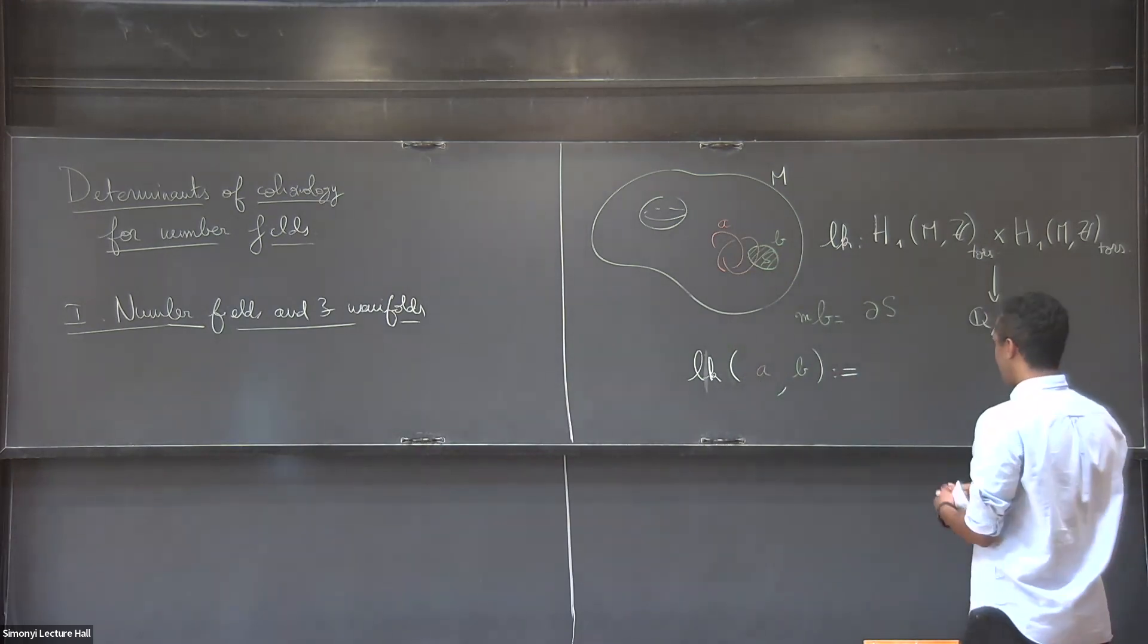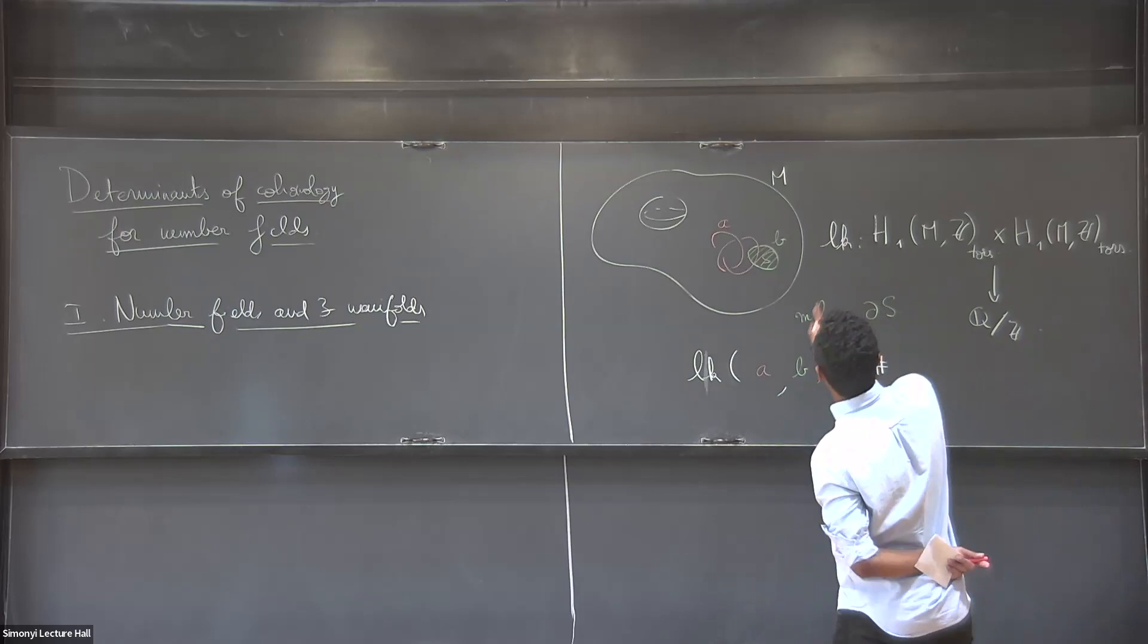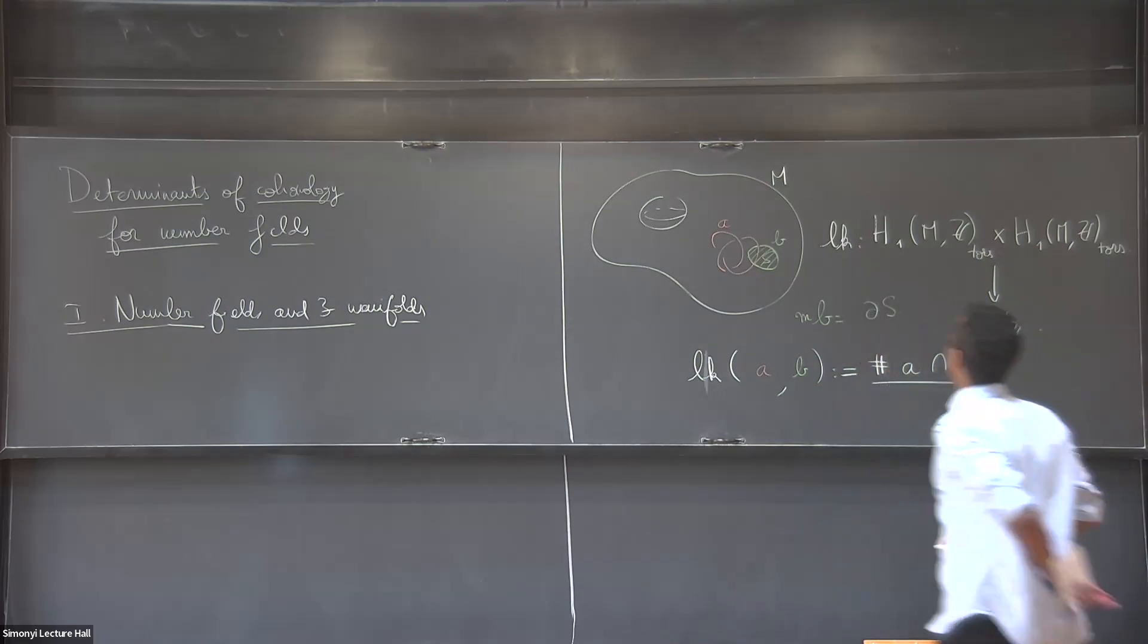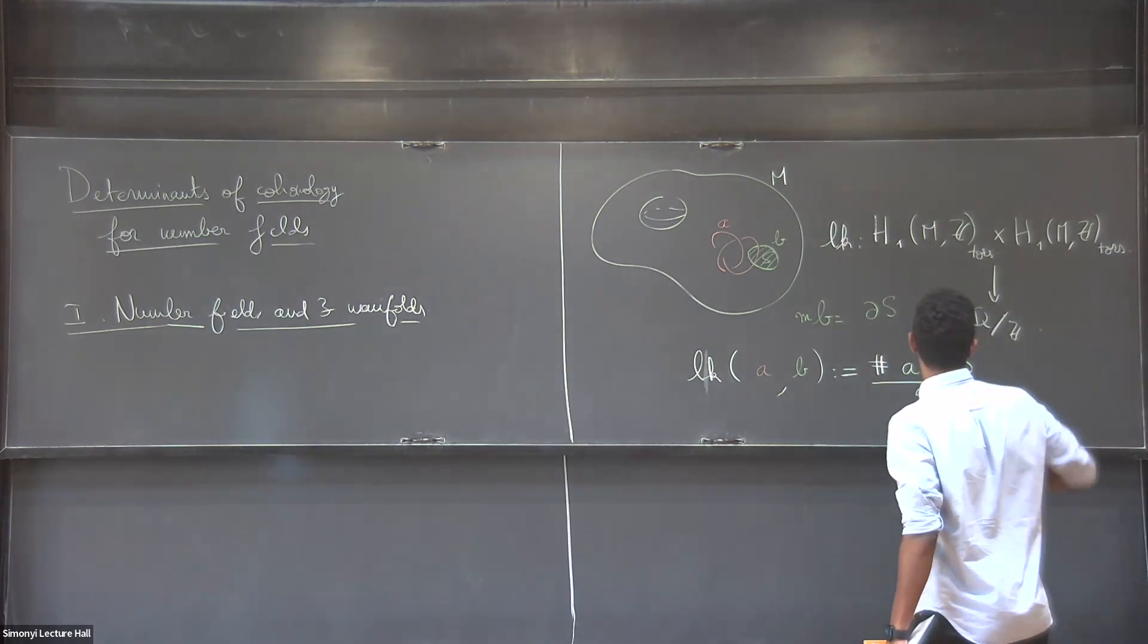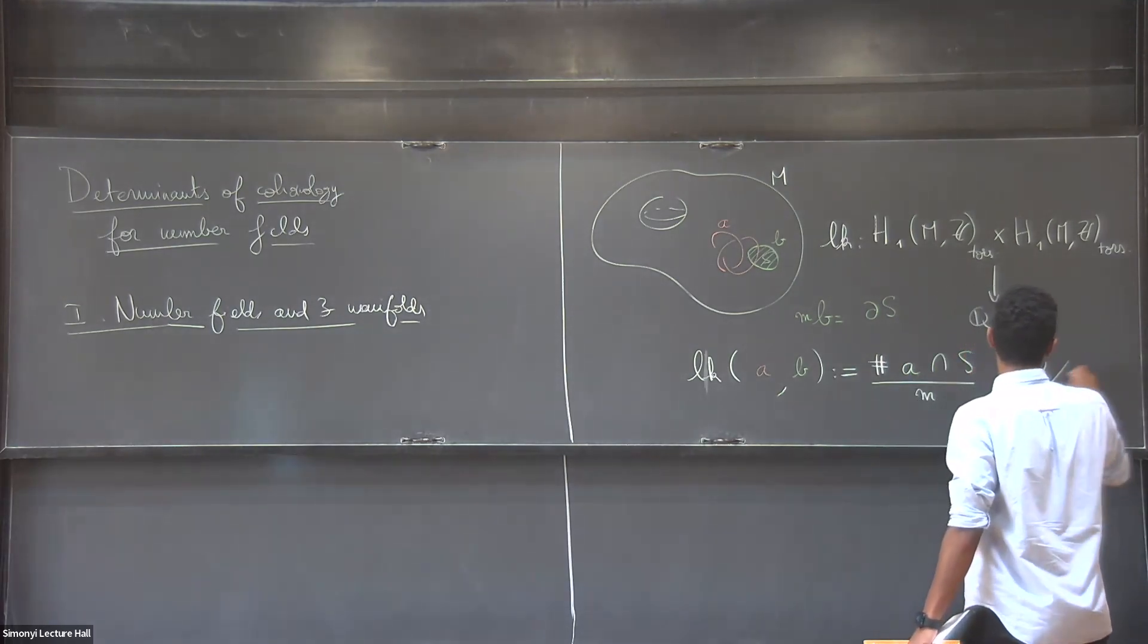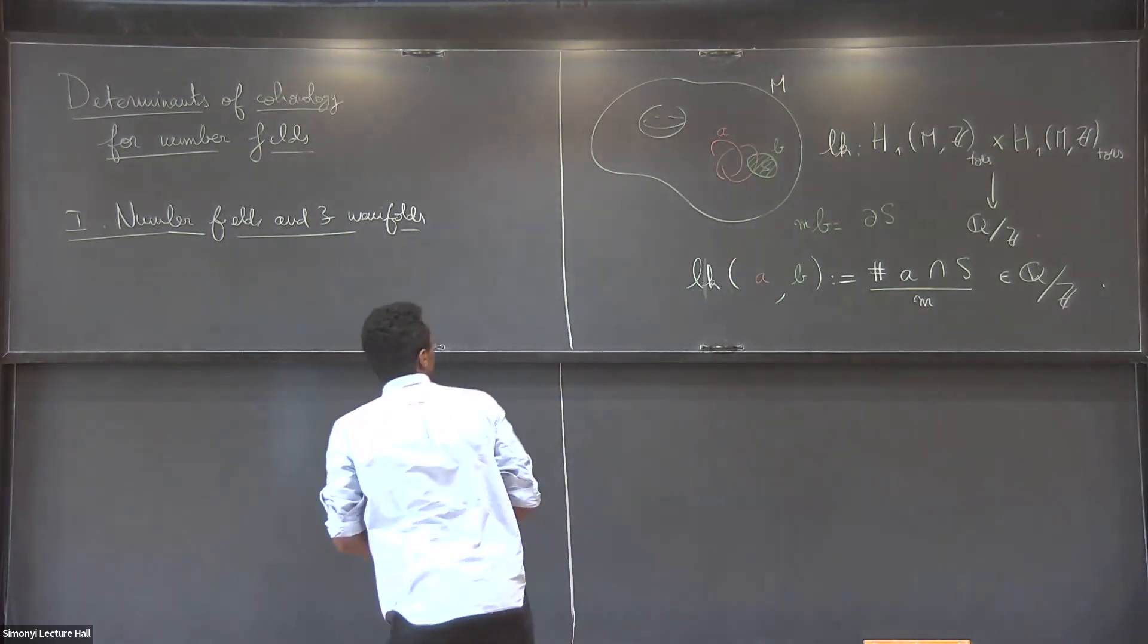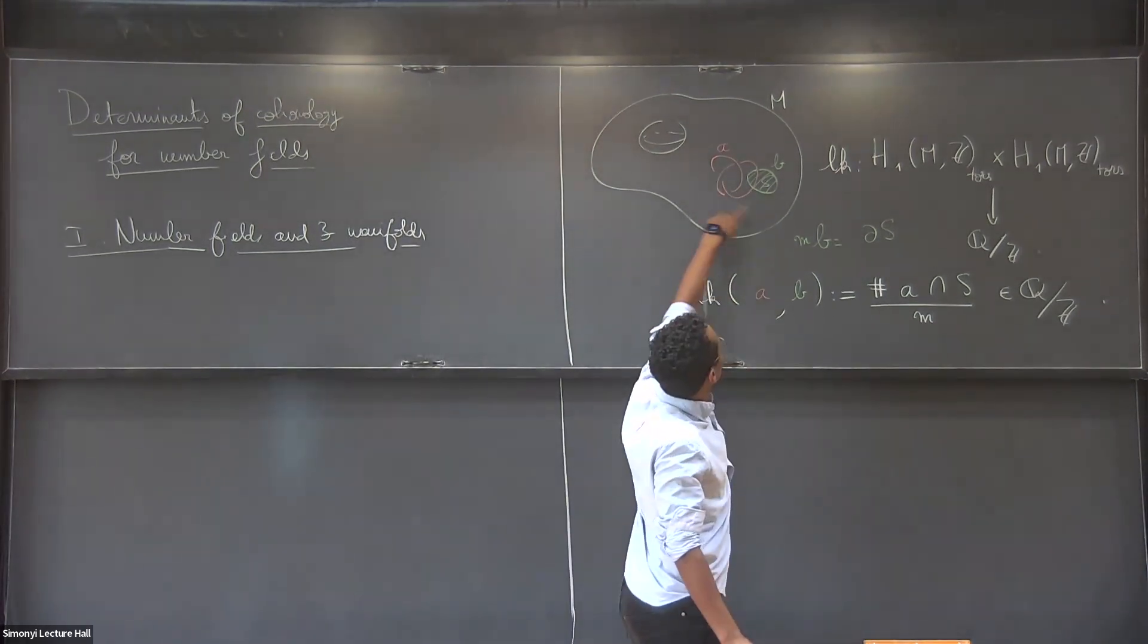Then I can define my linking as just counting the number of intersection points between A and the surface S. If your surface is in general enough position and dividing by M. So it turns out that this a priori defines a class in Q, but it's well-defined up to addition of things inside Z.